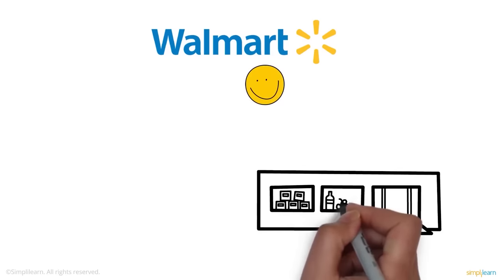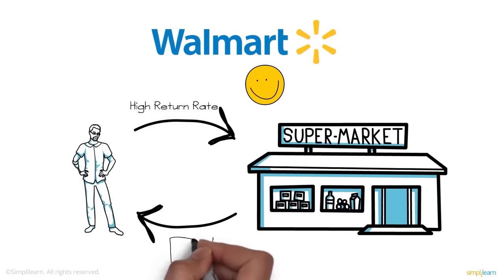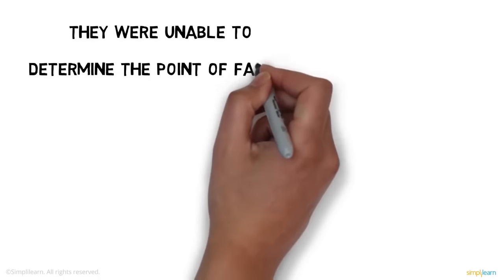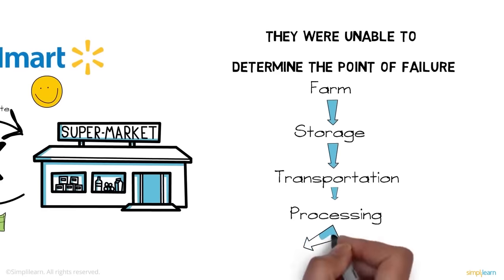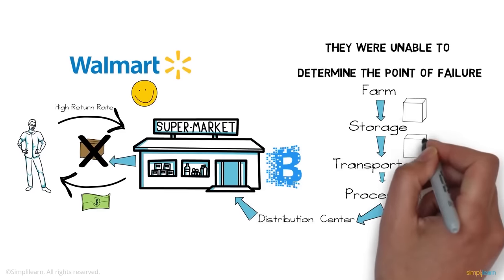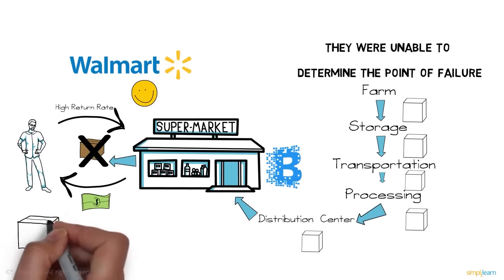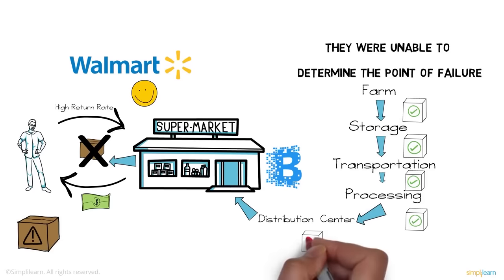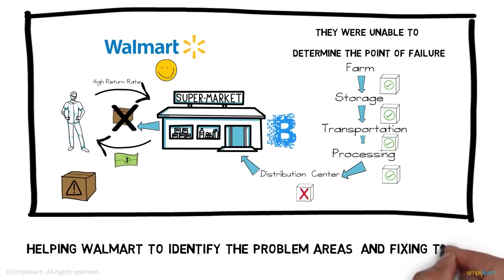Let's look at how Walmart uses blockchain to provide better service. Walmart was facing problems delivering quality products — they had a high return rate and large refunds due to bad product quality. They were unable to determine the point of failure in their supply chain, which spans from farm to storage to transportation to processing all the way to the customer. Then Walmart adopted blockchain technology. With blockchain, the quality of goods at each step was permanently inscribed within a block.